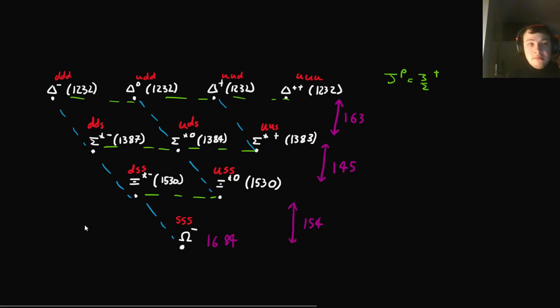And then, three years later, in 1964, it was discovered at 1672 MeV. So, that's a difference of one part in 200, which was really incredible.